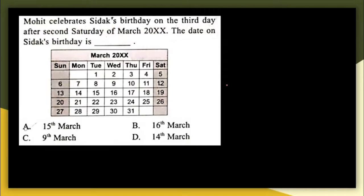Next question: Mohit celebrates Sidak's birthday on the third day after the second Saturday of March 2066. A calendar of that month is given. The 5th is the first Saturday and the 12th is the second Saturday. The first day after the second Saturday is 13th, the second day is 14th, and the third day is 15th.